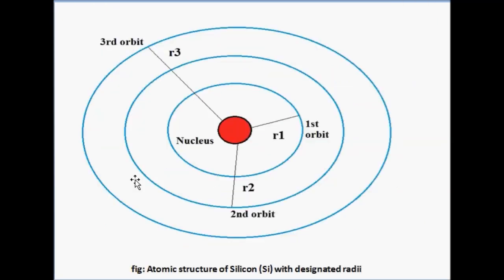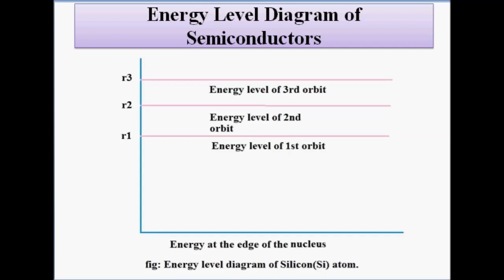The energy associated with each electron revolving around the nucleus in a circular orbit can be conveniently represented using energy level diagrams. The distances between the nucleus and the first, second, and third orbits are represented by radii r1, r2, and r3. Since energy is directly proportional to the radius, these give us the energy levels associated with electrons in the first, second, and third orbits respectively.